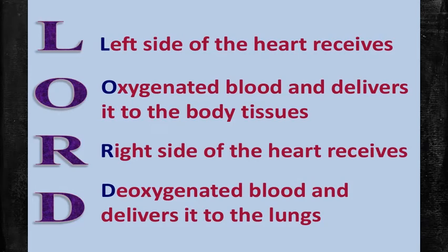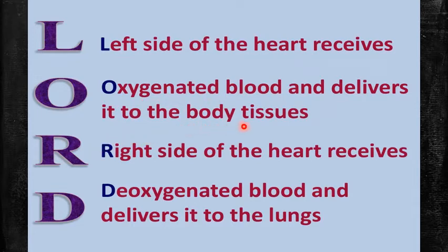Here is a clue for you — the keyword LORD. L is for Left side of the heart, which receives oxygenated blood and delivers it to the body tissues. R is for Right side of the heart, which receives deoxygenated blood and delivers it to the lungs. This will make it easy to remember which blood is coming from the heart and going from the heart.